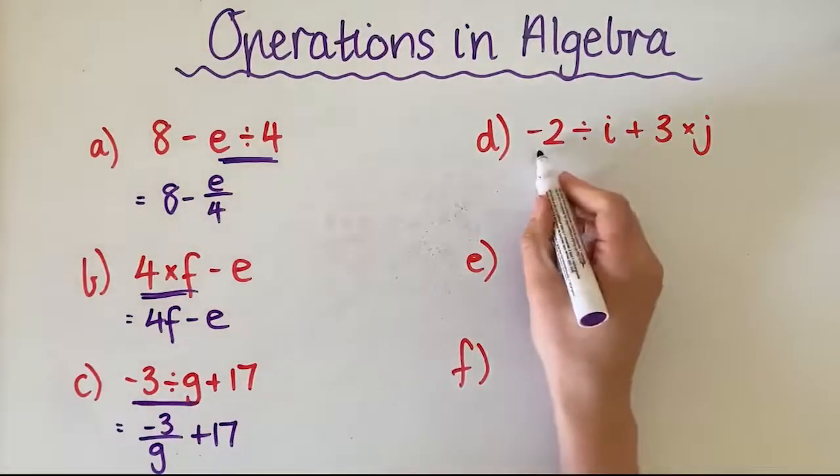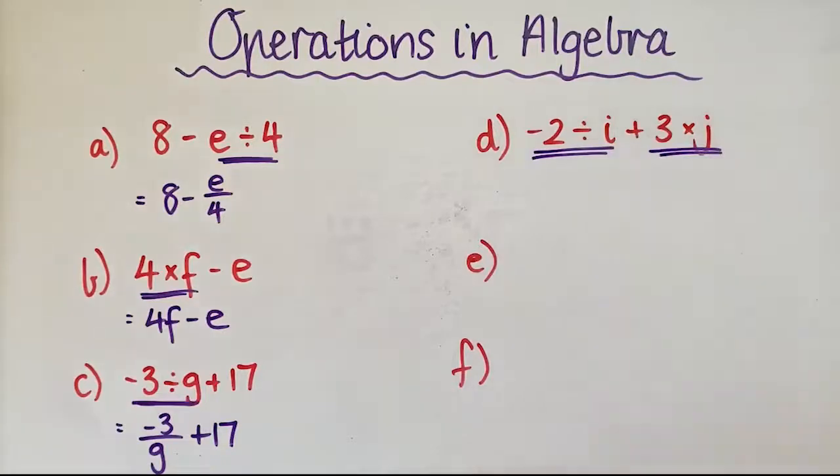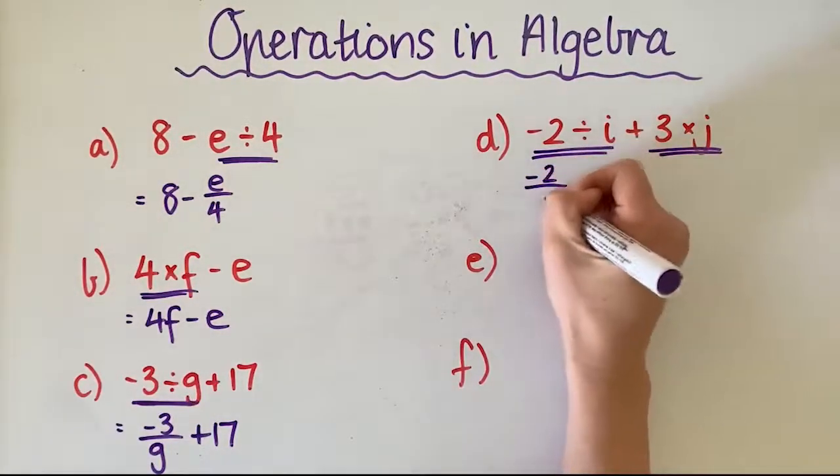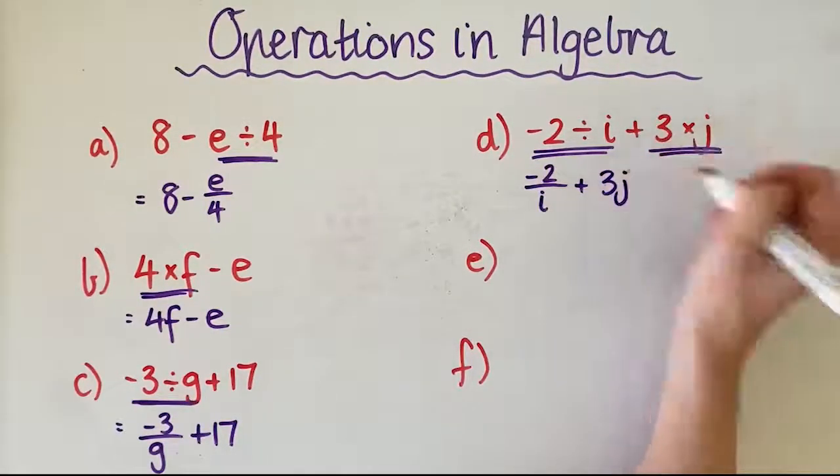So in this example, you actually have to combine two different ones. You can see that we've got a multiplication and a division. So this would become negative 2 divided by I plus 3J.